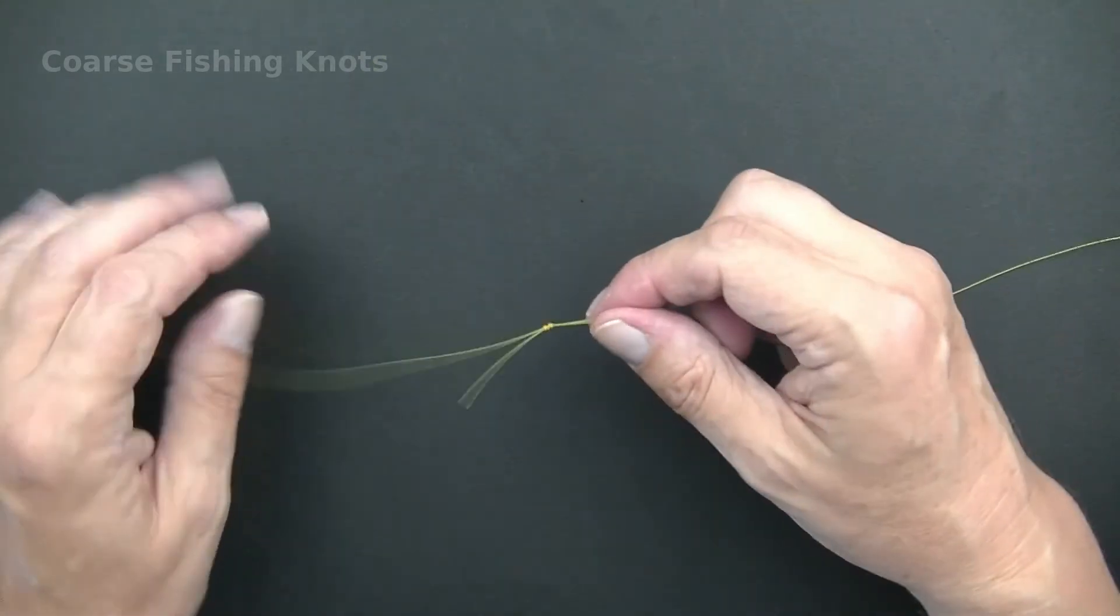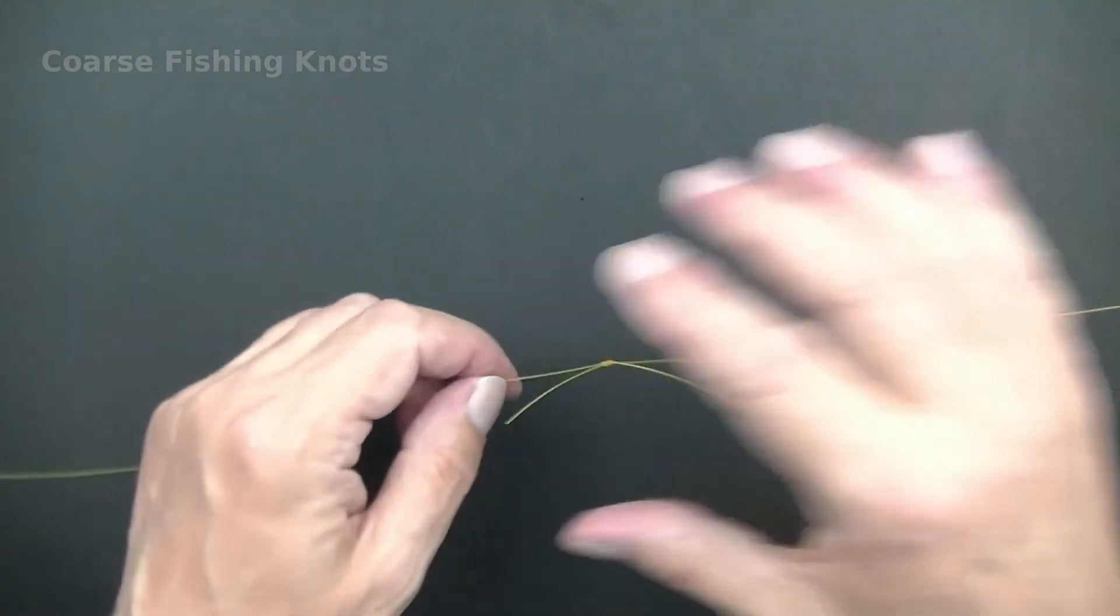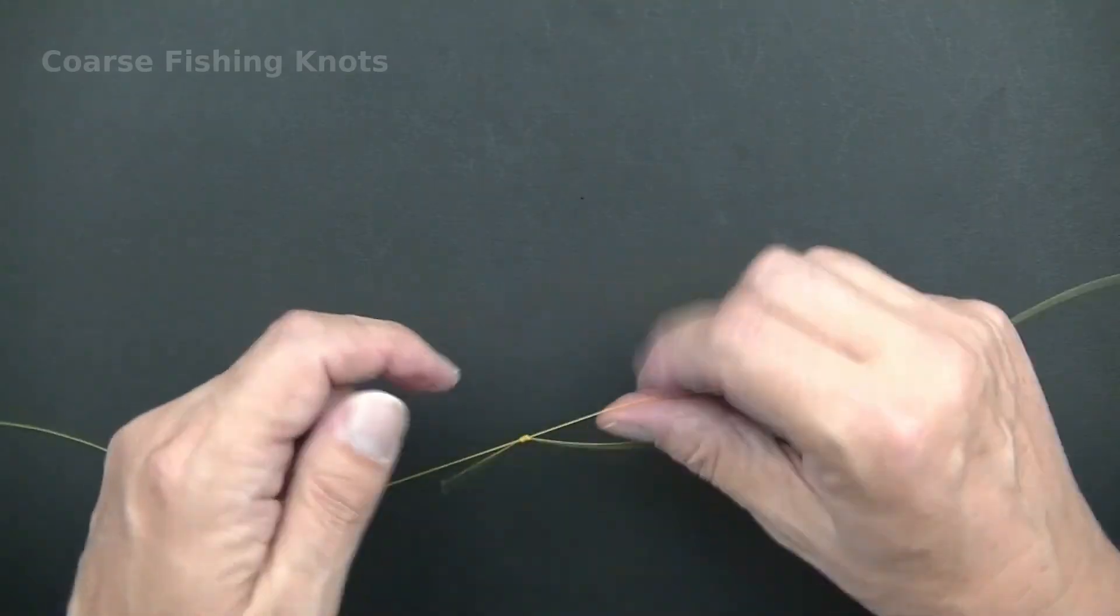The finished knot grips the line to act as a stop but can still be slid up and down the line to a new position.